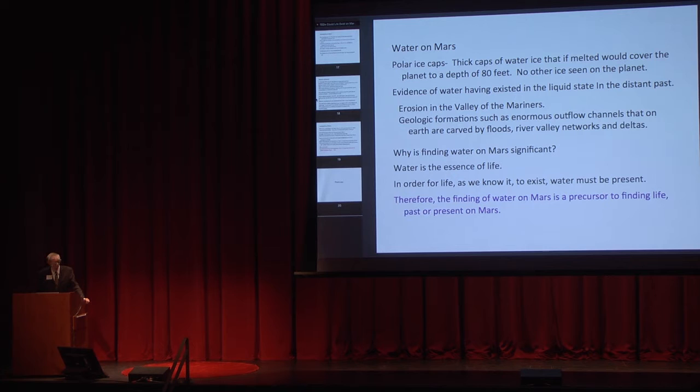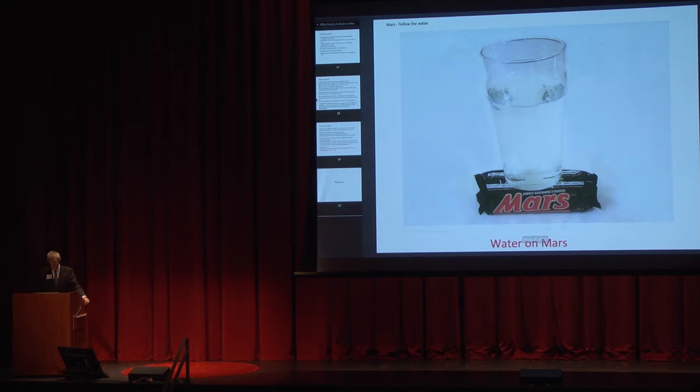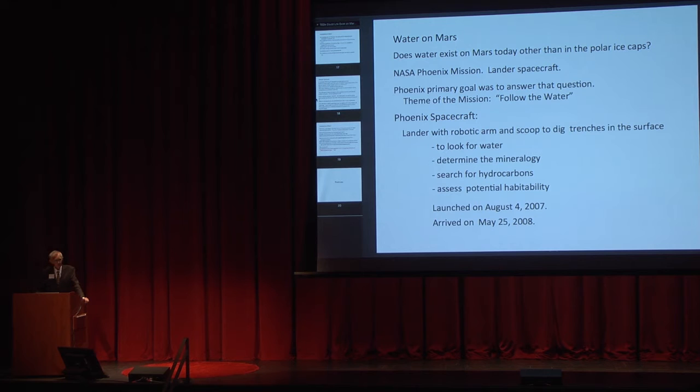Why is finding water on Mars significant? Water is the essence of life. In order for life to exist, water must be present. So finding water on Mars is a precursor to finding life on Mars. This is the picture of the Valley of Marineris that I talked about. You see all these gullies here? This type of terrain is actually formed by running water. It's formed that way on Earth, and so the thought is that it's probably formed that way by running water on Mars. That's some indirect evidence, at least, that water existed on Mars sometime in the past. Of course, you can always find water on Mars.